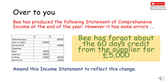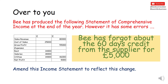B has given you the following Statement of Comprehensive Income again, but B has forgotten about the 60 days credit from the supplier for £5,000. You need to amend this statement to reflect that change. Hopefully you've been able to do that by increasing the cost of sales by £5,000, because it relates to this trading period. That obviously affects your gross profit, which you need to amend, and that would also affect your overall net profit, which you have to amend as well. Remember that making that amendment means you've got to change those other elements too.